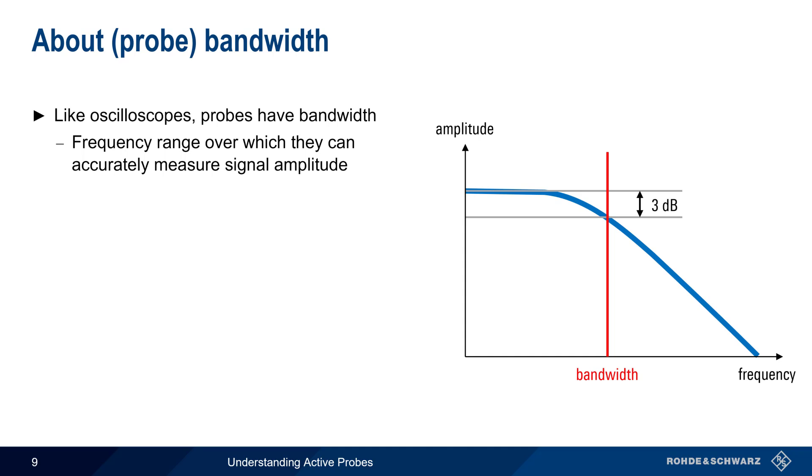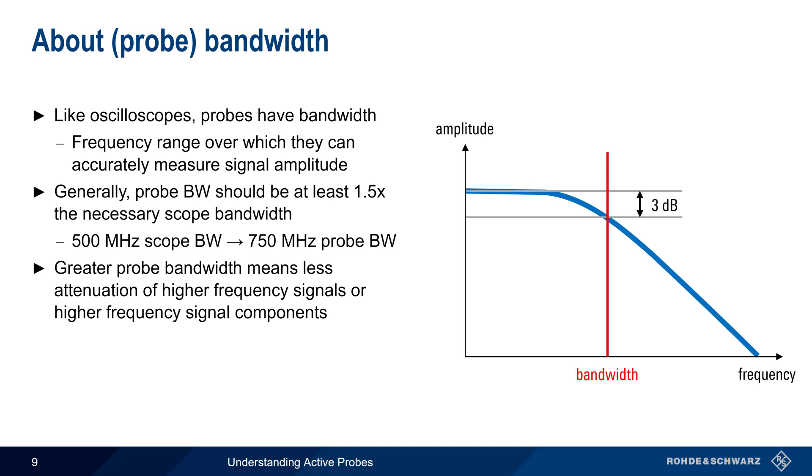Generally speaking, the bandwidth of a probe should be at least one and a half times the needed scope bandwidth. That is, if our application required a scope bandwidth of 500 MHz, we would want a probe with 750 MHz of bandwidth. Greater scope bandwidth means that there is less attenuation of higher frequency signals or signals with higher frequency components.